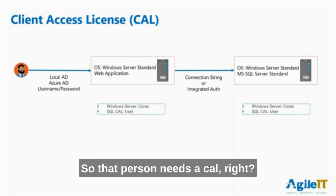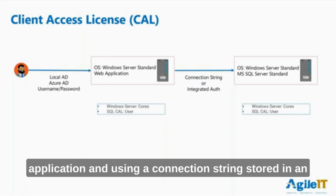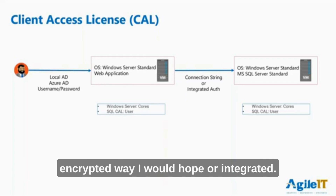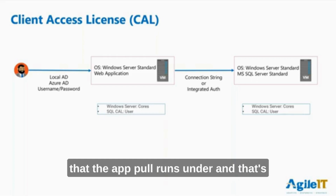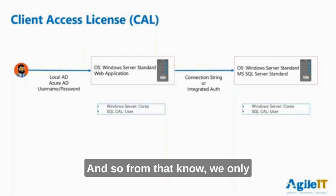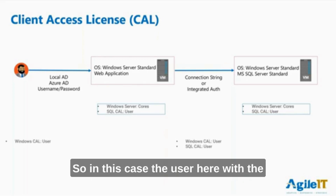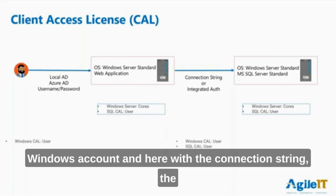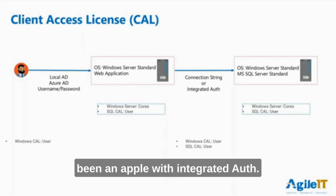So that person needs a CAL. And then the application itself — let's say it's an IIS web-based application — uses a connection string stored in an encrypted way, hopefully, or integrated authentication. We have one account that the app pool runs under, and that's what connects to the SQL database. From that perspective, we only have one license being used. So in this case, the user has the Windows CAL, and with the connection string to the database, we have one SQL user — could be an app pool with integrated auth. In your database, you might only have one SQL user in there.